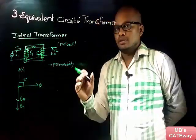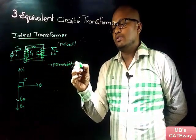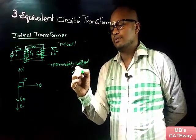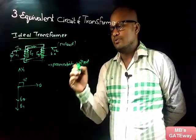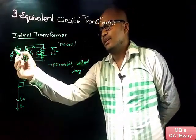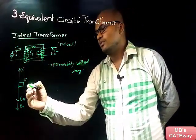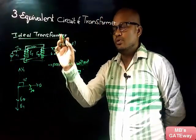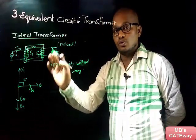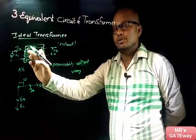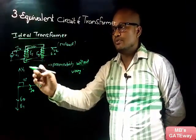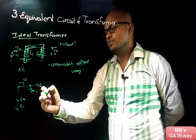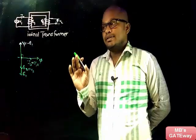In the ideal transformer, permeability does not vary, so flux phi and no-load current I₀ will be in phase. In the no-load ideal transformer case there are no losses, so the entire input current is used for magnetizing the core. Therefore I₀ is equal to Iμ (the magnetizing current).